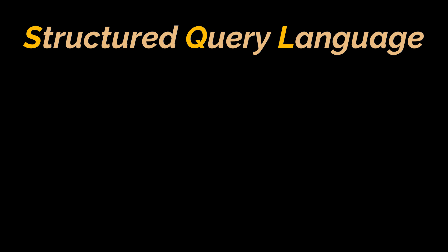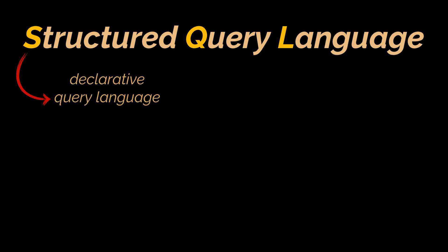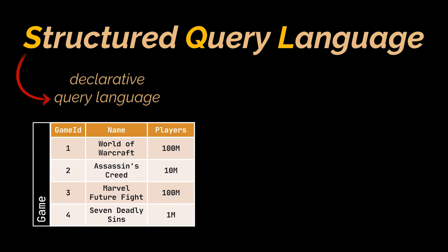SQL is a declarative query language, as opposed to procedural imperative languages like Java. What this means is: if I want to retrieve in this table all the games that have a number of players bigger than 10 million...